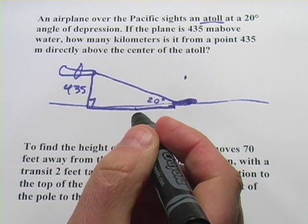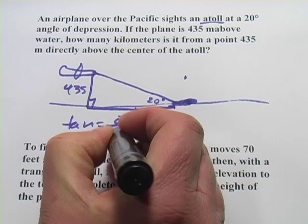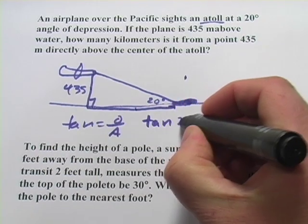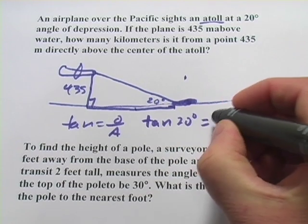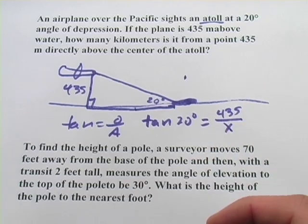So remembering, SOHCAHTOA, opposite over adjacent, that's the tangent. So this is going to be the tangent of 20 degrees is the opposite, 435, over the adjacent, which we don't know. So I'll put an x in there.